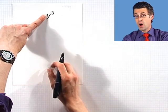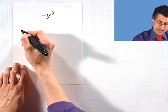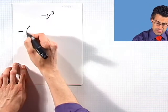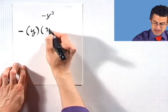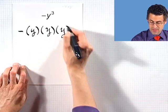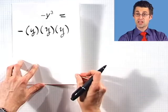So what that means is we're going to see y appearing 3 times. So I've got that negative sign way out in front. And in expanded form we'd see y times y times y. That's the expanded version of minus y cubed.